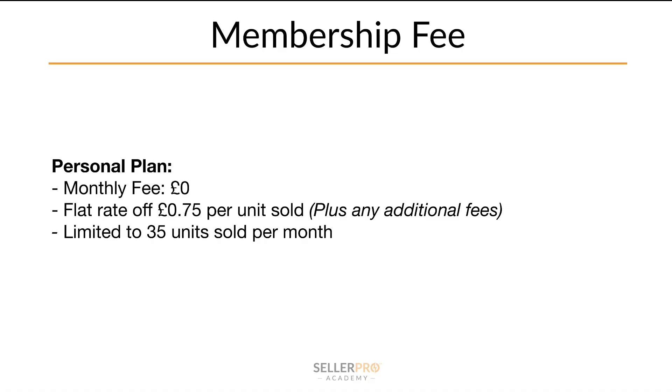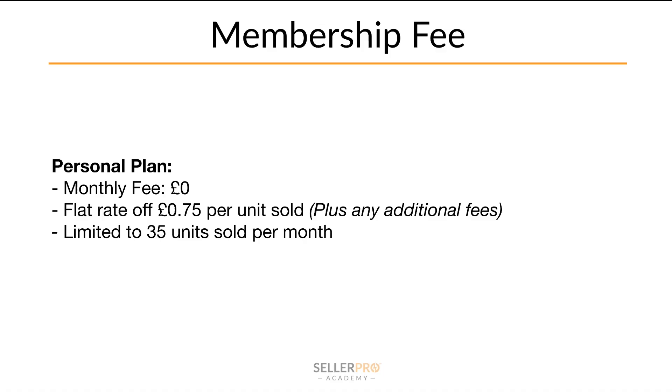The first thing we want to look at is your membership fee. There are two options: a personal plan and a professional plan. The personal plan is zero pounds, but you have a flat rate of 75 pence per unit sold, plus any additional fees. There's always a flat rate of 75 pence — this is different in different countries; in the US it's around a dollar. However, the personal plan is limited to only 35 units sold per month, so if you're selling more than 35 units, you need to be on a professional plan.